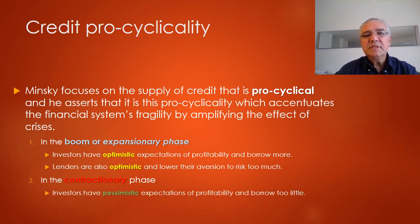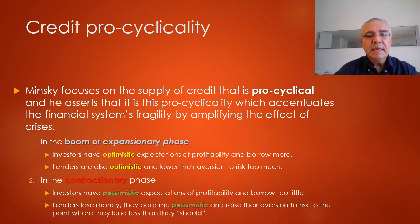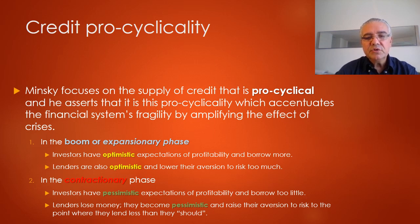In the contractionary phase, investors have pessimistic expectations of profitability and borrow too little. Lenders lose money and become pessimistic, raising their aversion to risk to a level where they are not lending enough.